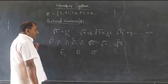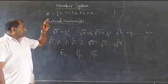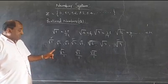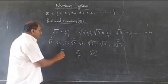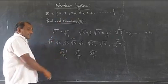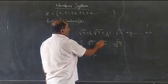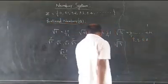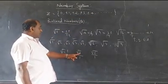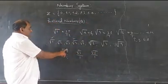Of course you can write square root of 2 divided by 1, square root of 3 divided by 1, square root of 6 divided by 1. But are these rational numbers? No. Because the definition of P by Q requires that P and Q are integers. Here, 1 is an integer, but square root of 2, square root of 3, and square root of 6 are not integers. So we cannot call them rational numbers.